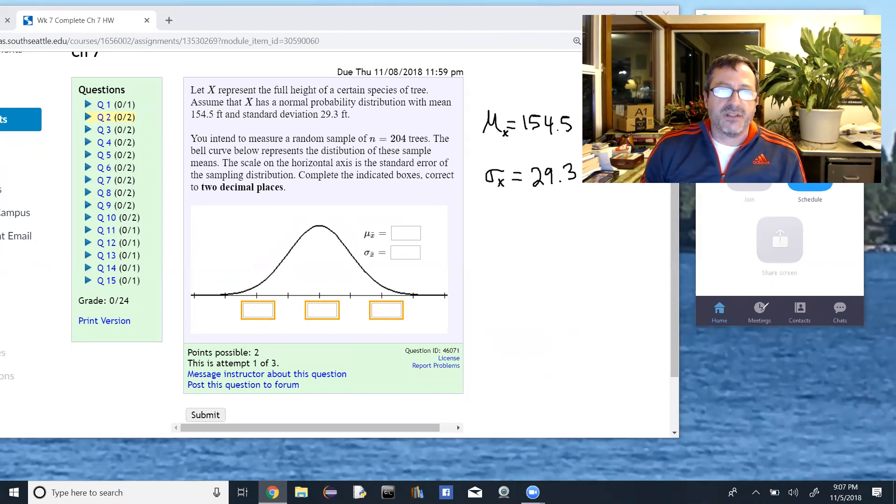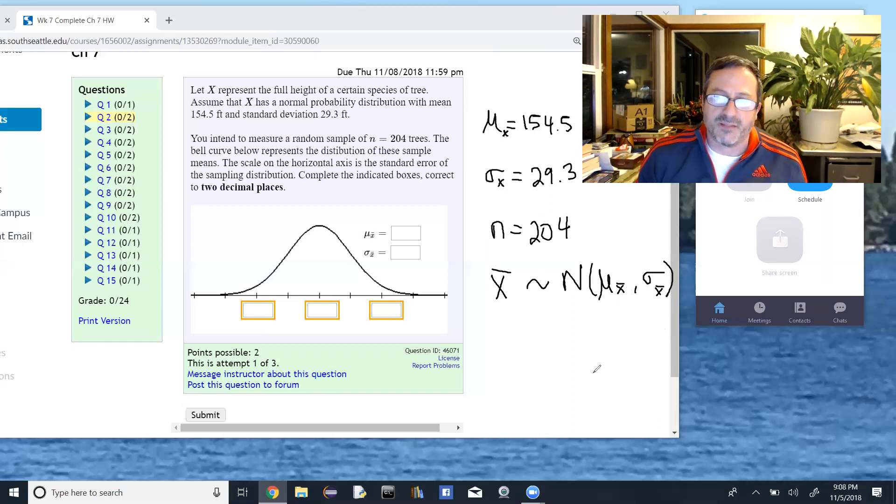Okay, then when we read the next part, it says you intend to measure a random sample of N equals 204 trees. So I'm going to write that down here as well. So what the central limit theorem tells us is that there's a new random variable for the sample means, and that new random variable is normal. Its mean is called mu sub X bar and its standard deviation sigma sub X bar. So the question is, what is the mean mu sub X bar and what is the standard deviation? Well, it turns out the means are the same. So the mu sub X bar equals mu sub X. In this case, that's 154.5.